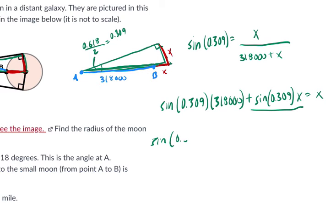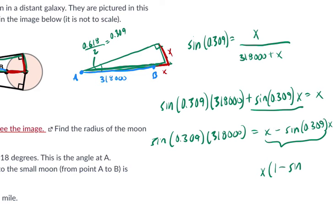Because look what happens. We get the sine of 0.309 times 318,000. And that's going to equal x minus the sine of 0.309 times x. And on this right-hand side, what's our common factor? What's in both terms? Well, it's x. So x times 1 minus the sine of 0.309 is what this really equals on the right.